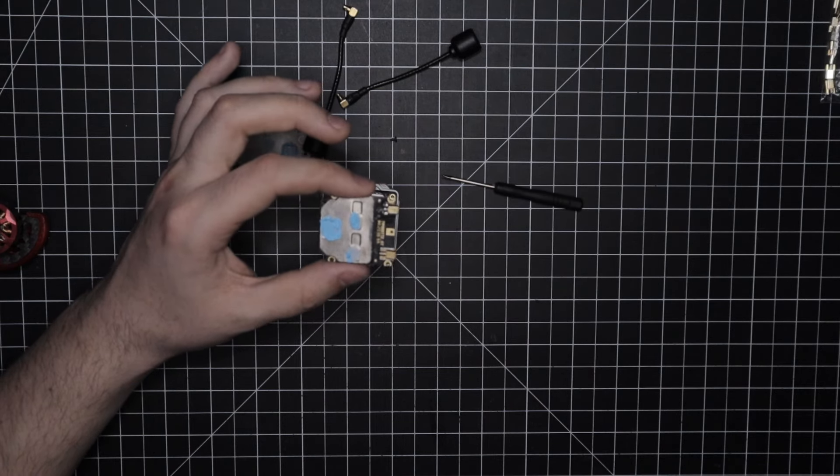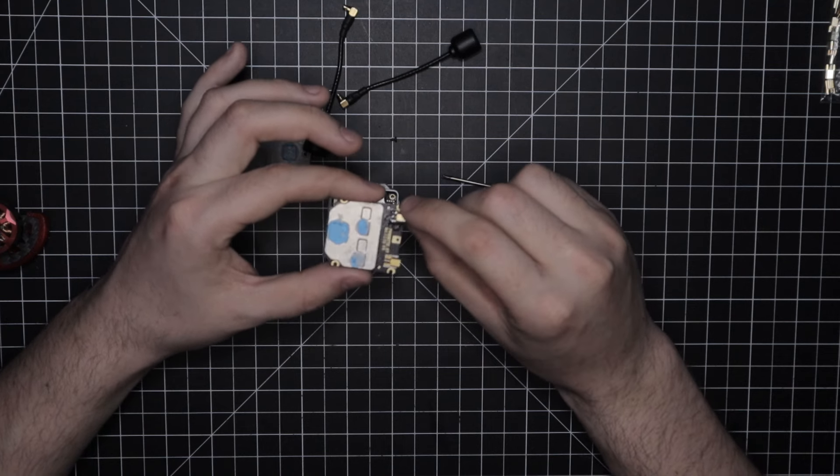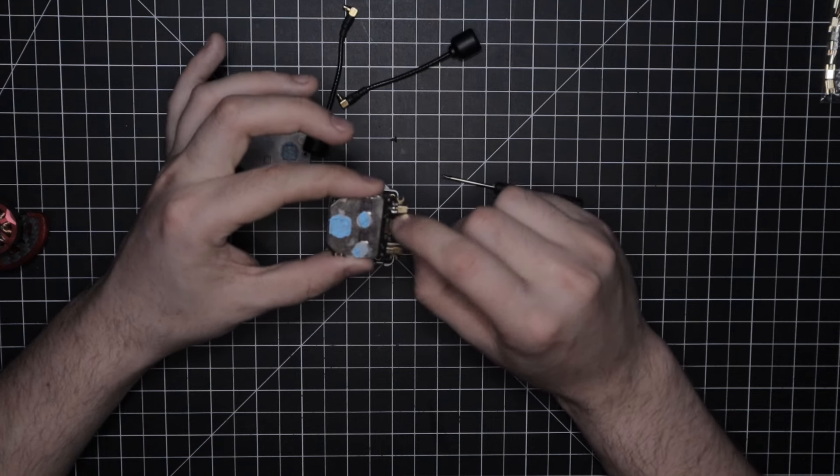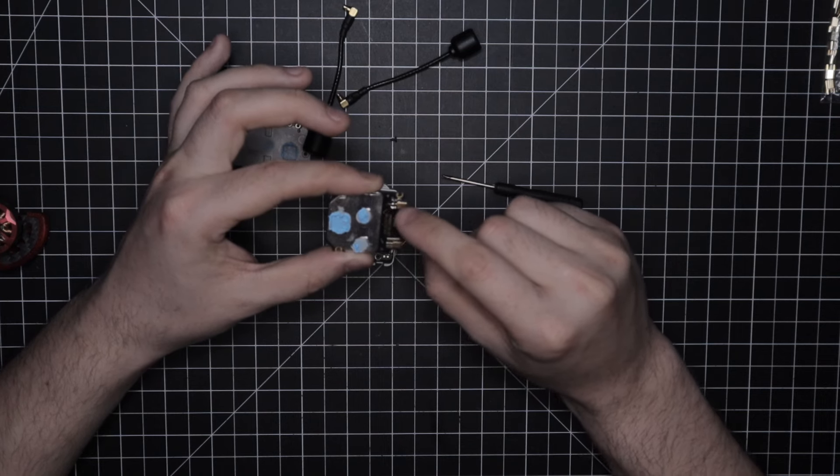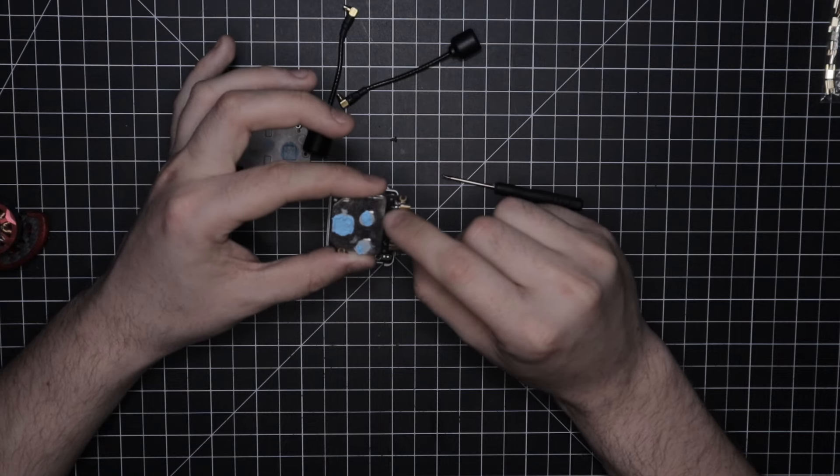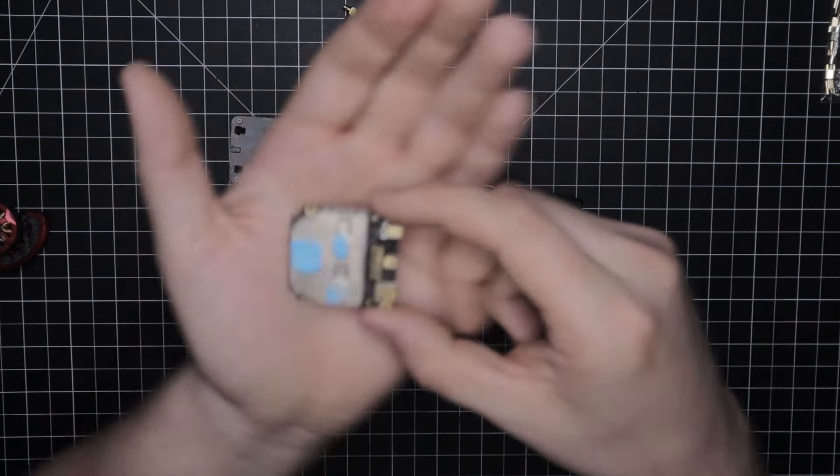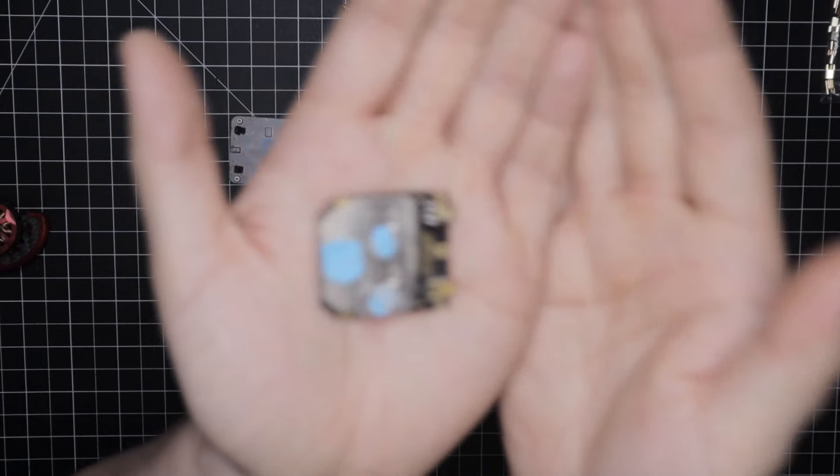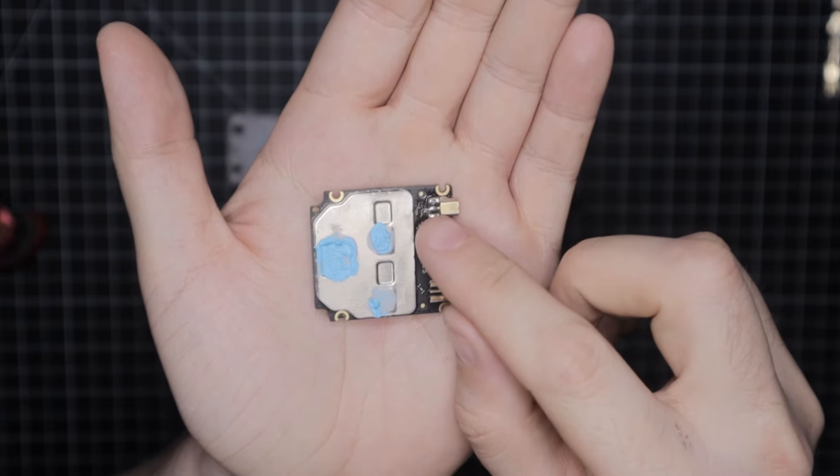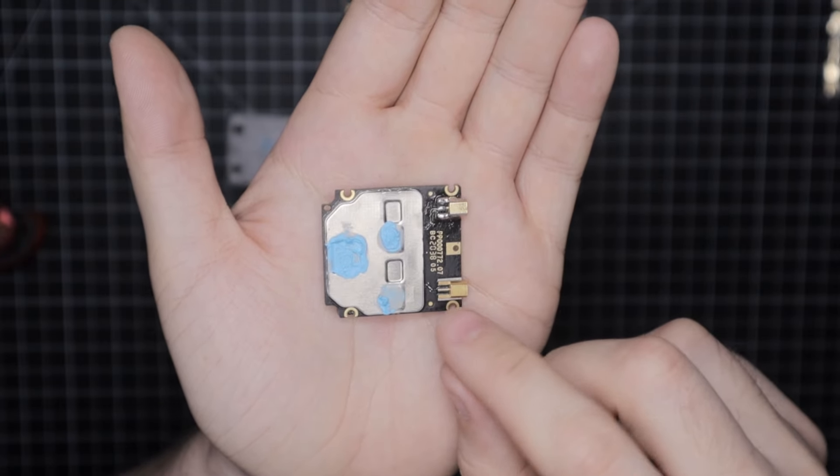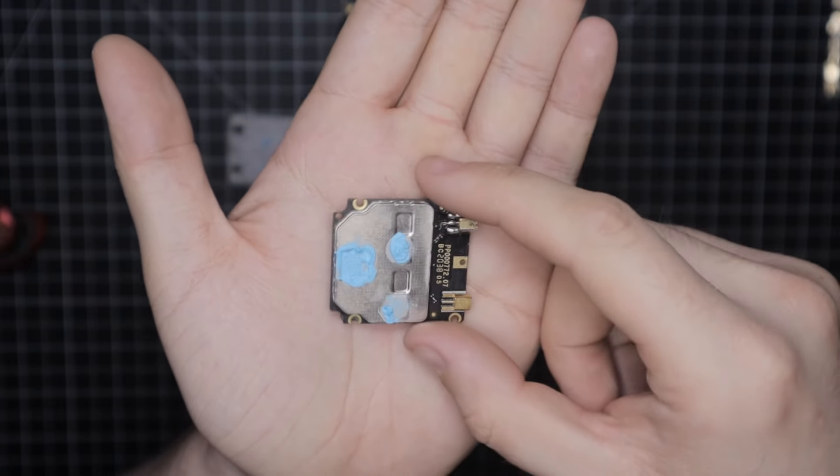But anyways, so I went ahead and I soldered it back on. It had broken so badly off the board that a lot of the middle point where the actual signal comes in—that was broken. So I had to kind of make a big blob of solder here to kind of get it. Let's get it to focus. See, I had to make a blob over here to get it to actually connect because I couldn't get it to connect before.